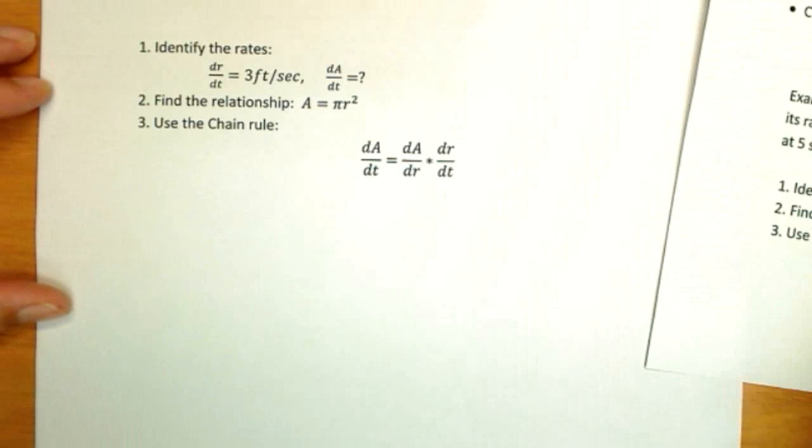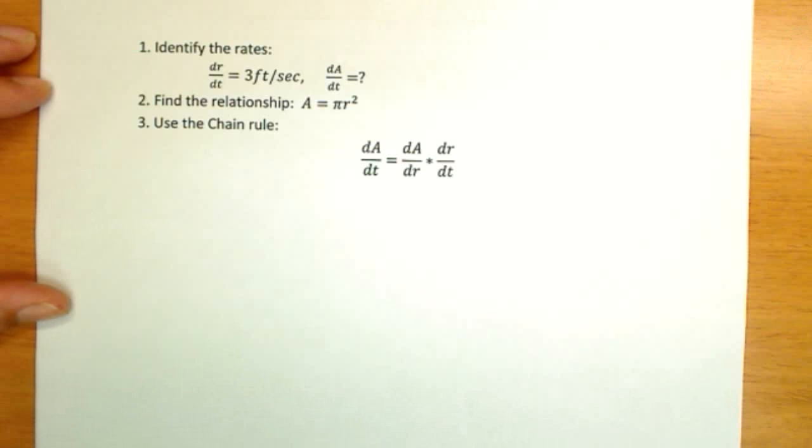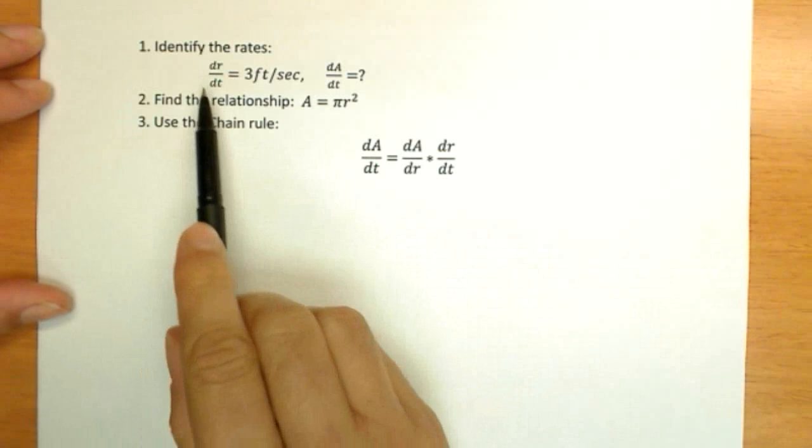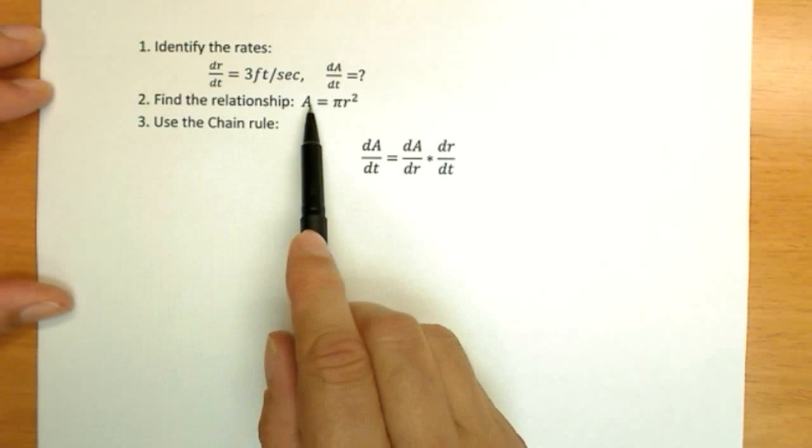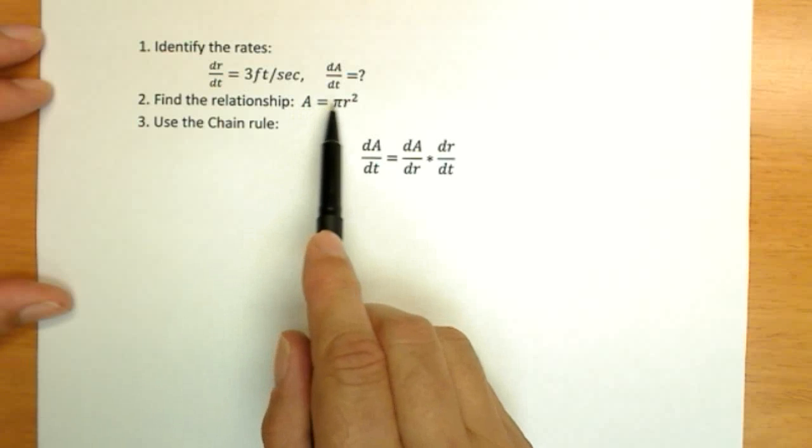So let me move on to the next page where I've written this out a little more clearly. So we identified the rates. dr/dt is 3 feet per second. dA/dt is unknown. The relationship, of course, between A and R well-known, A equals pi r squared.